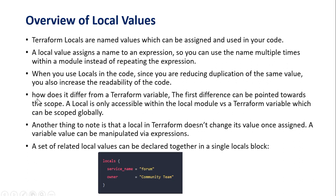How does it differ from Terraform variables? The same things can be done with variables, but there are differences. The first difference concerns scope: locals are only accessible within the local module, whereas Terraform variables can be scoped globally.